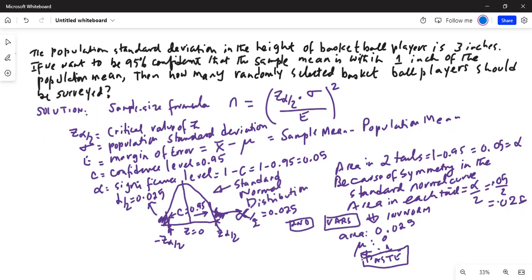So let's do that. Second, inverse, three, inverse normal. Area is 0.025, mean is 0, standard deviation is 1, paste, enter, and enter. And this minus z alpha by 2 is minus 1.96.